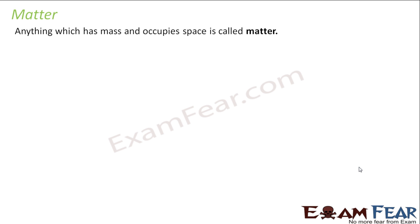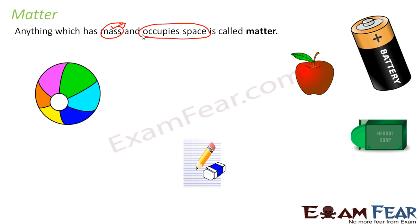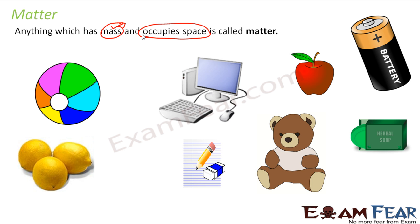Having discussed what chemistry is, where we use it, and its advantages, let's start the chapter with matter. Matter is anything that has a mass and occupies space. For example, soap, notebook, pencil, pen, apple, battery, ball, lemons, computer — pretty much everything you see around us is matter. The fan, the tube, the bulb — anything is matter because it has mass and occupies space.